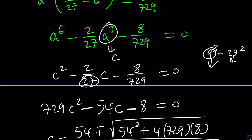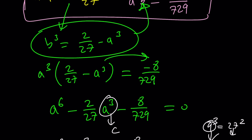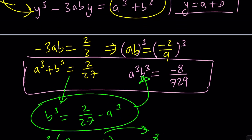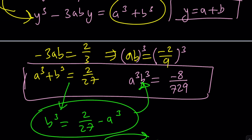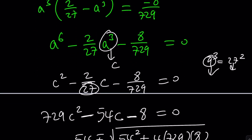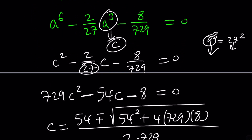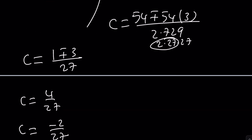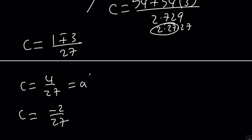That was easy, after all these simplifications. You need a little bit of number theory and prime factorization. The key thing to remember is that a cubed equals c, so from the c values we can find a and b.